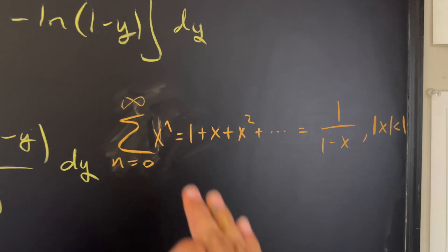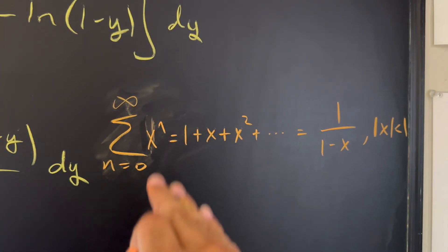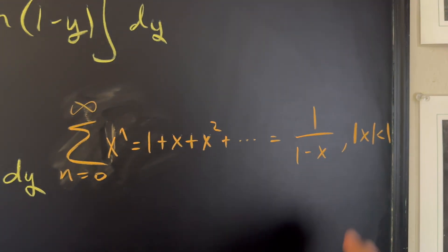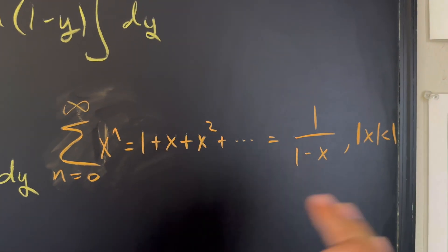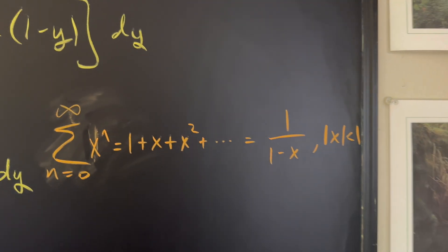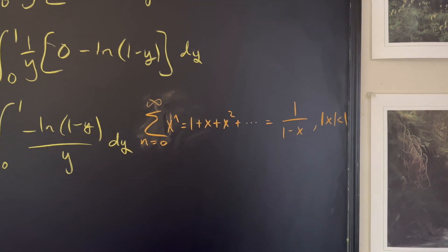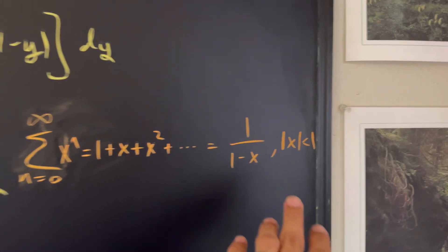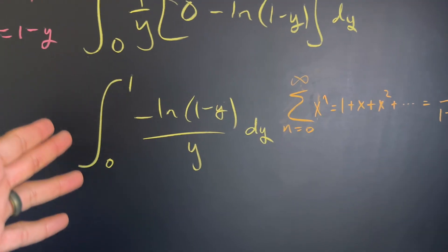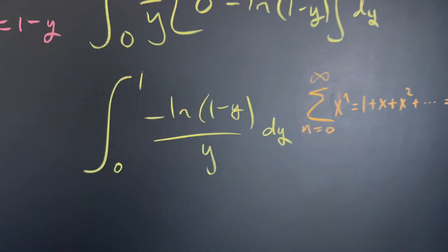This is a general power series right here. From zero to infinity of x to the power of n, and it becomes one plus x plus x squared, and on and on. And this is actually equal to one over one minus x, provided that the absolute value of x is less than one. You can probably recognize this as a geometric series. Now, the fact that the absolute value of x needs to be less than one holds true, meaning that we can use it because we have from zero to one right here.